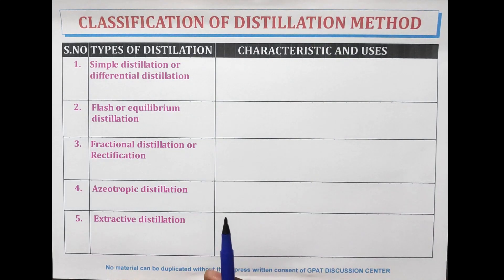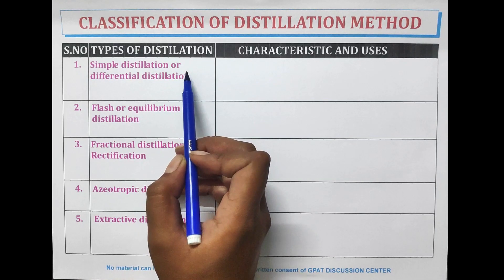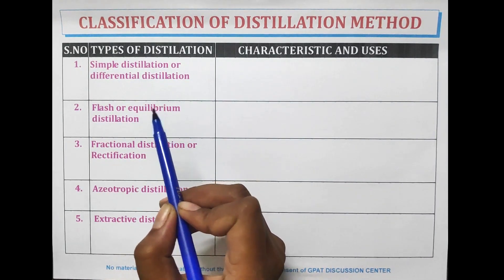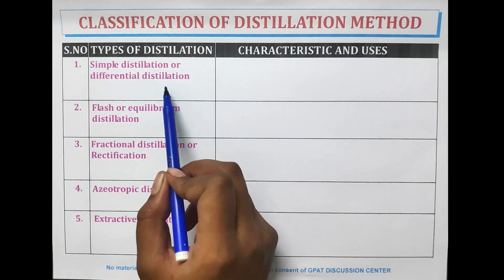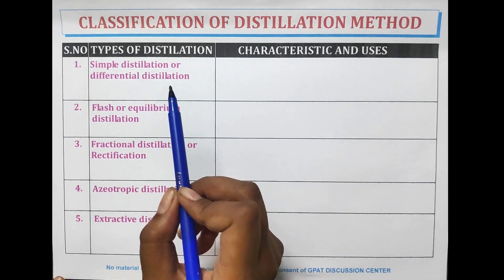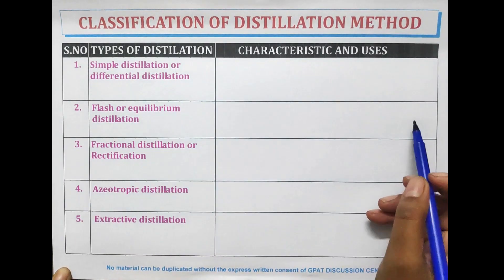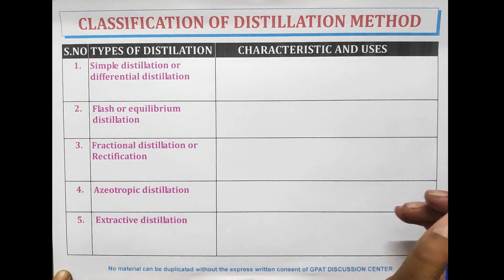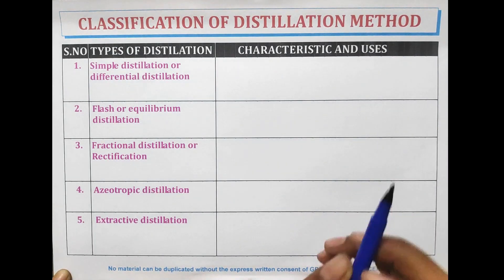The various types of distillation include simple distillation, which is also known as differential distillation. Simple distillation is used for the preparation of distilled water, water for injection, and aromatic waters. It is also used to separate non-volatile substances from volatile substances.